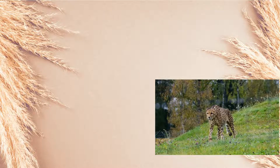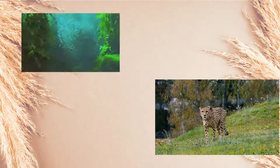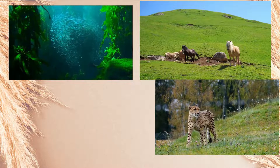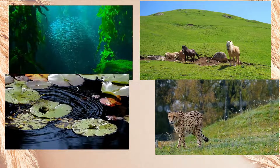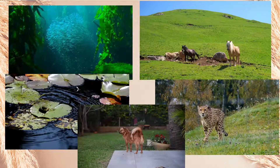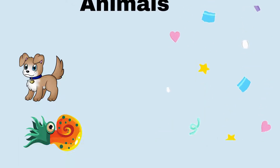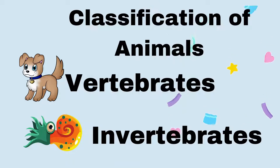Animals can be found in the environment — in the forest, the sea, and the grassland. Animals in our environment can be classified as vertebrates and invertebrates.